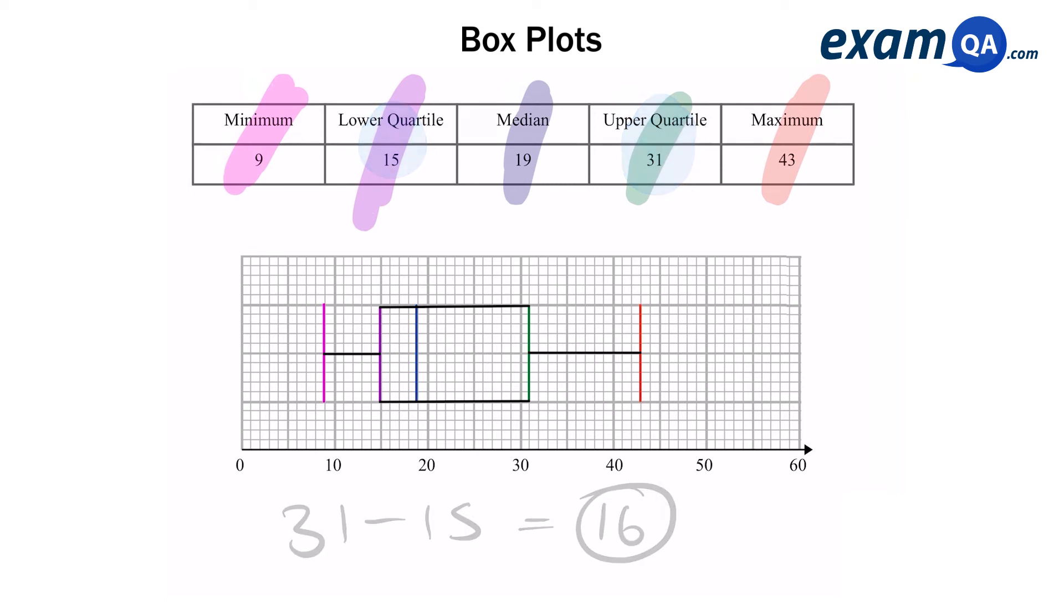The next part says given that in the sample there was 400 participants, work out how many participants were above 31. Now looking at the box plot you should recognize that 31 is your upper quartile. And as I said before you should know that 75% of your data is below it and 25% of your data is above it.